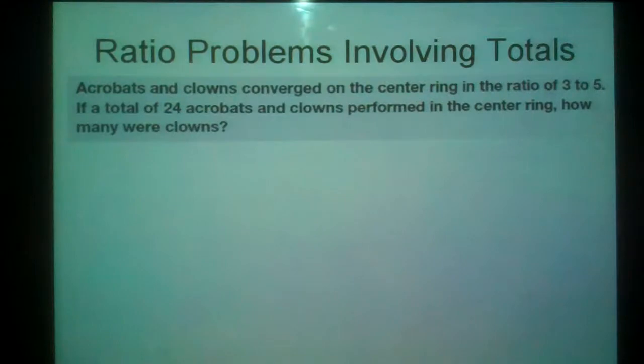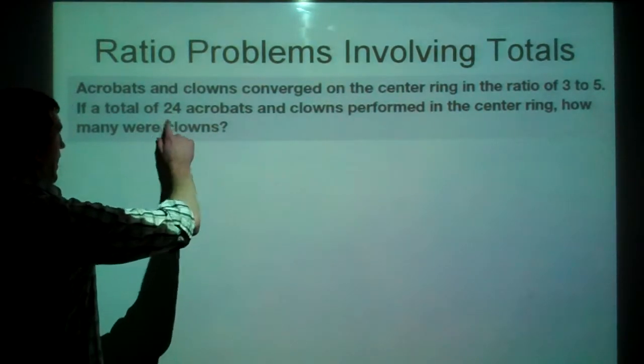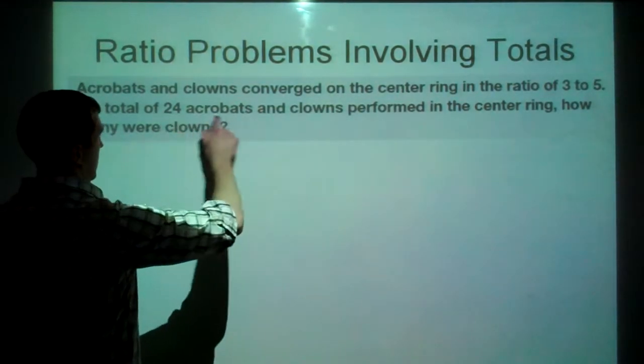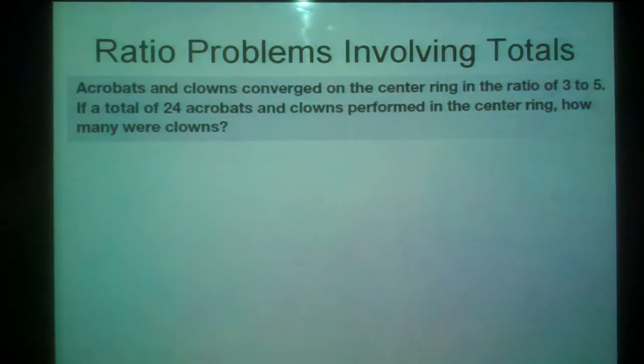Okay. Now the total. So let's take a look at this example. Acrobats and clowns converged on the center ring in a ratio of 3 to 5. A total of 24 acrobats and clowns performed in the center ring. How many were clowns? So, this is what they give us here is 24 acrobats and clowns. So this is a total of both acrobats and clowns.